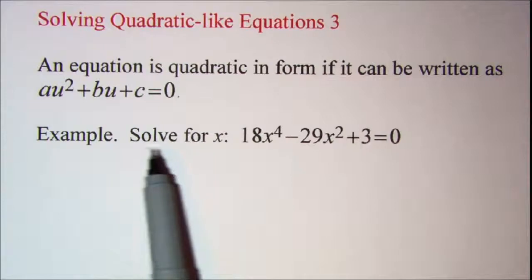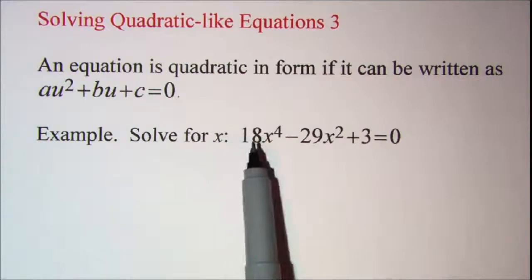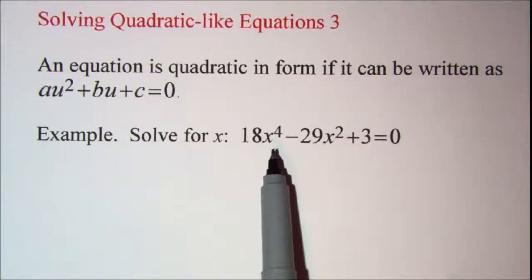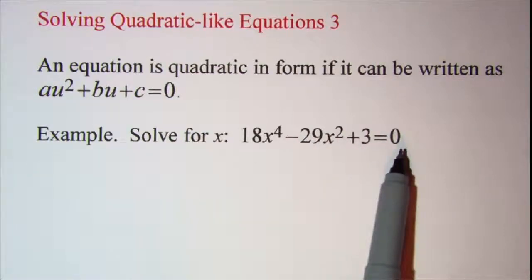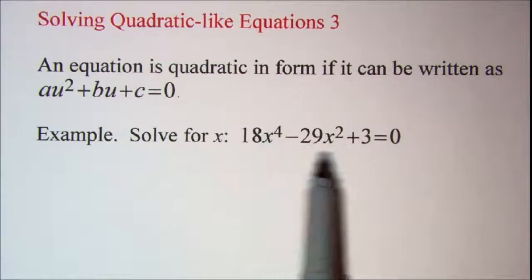The example that we're working with is to solve for x: 18x to the fourth minus 29x squared plus 3 is equal to zero.